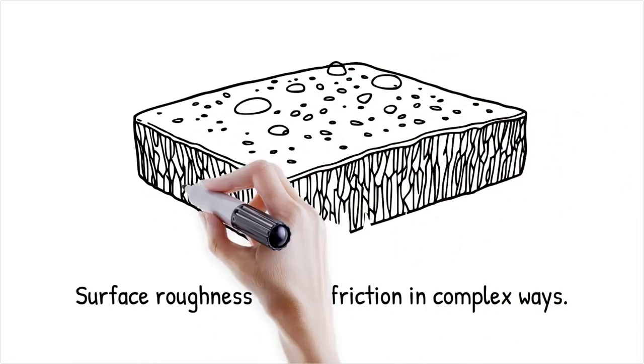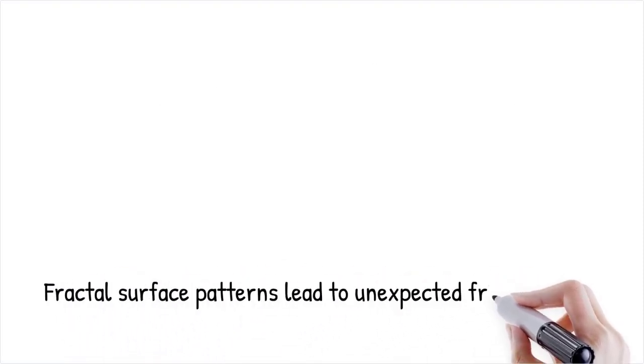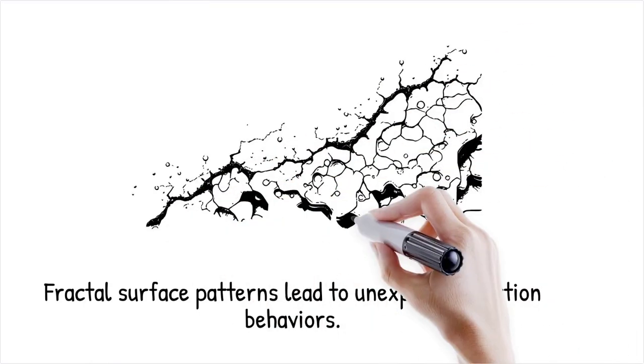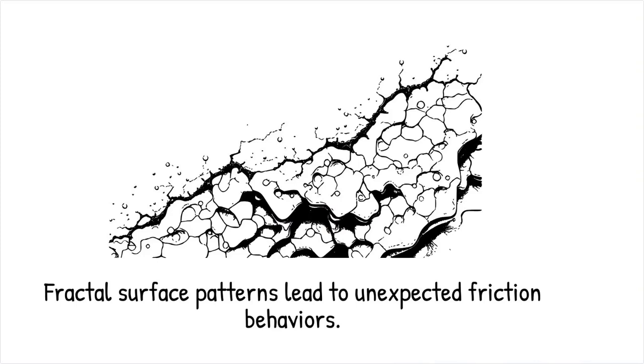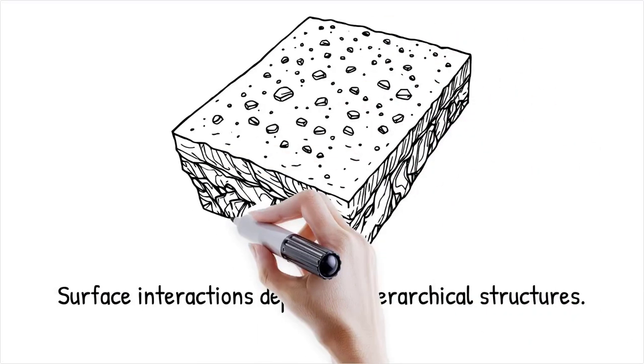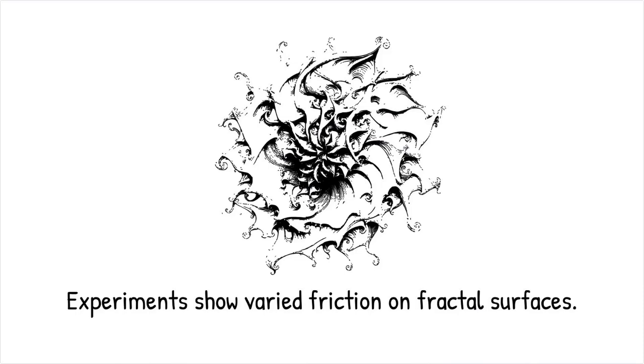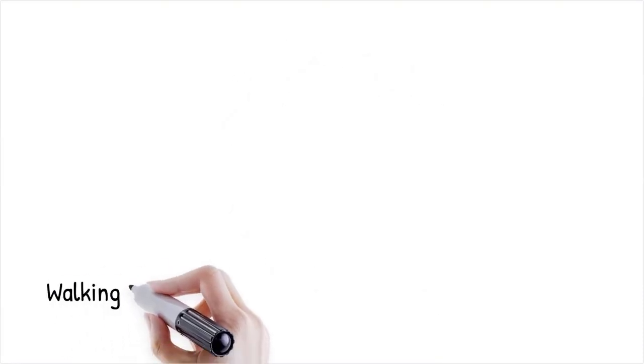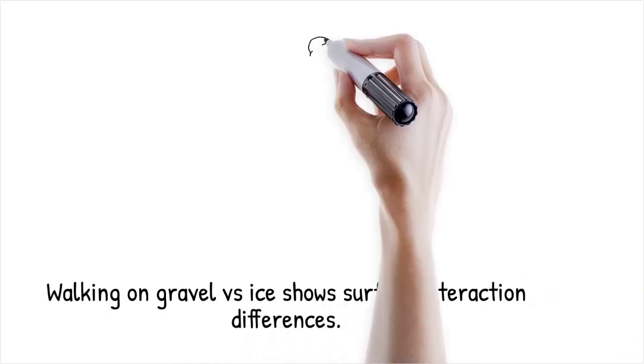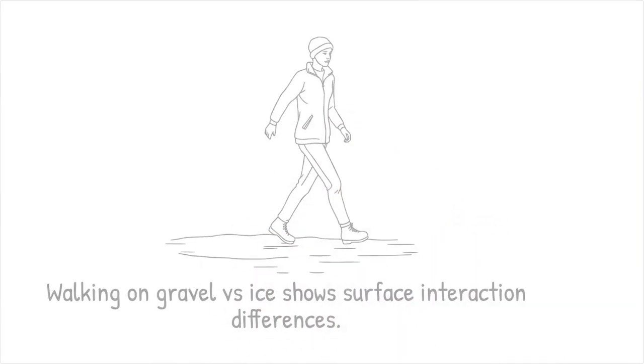Traditional friction models assume that surface roughness increases friction due to interlocking asperities, but real-world observations show that highly rough surfaces can exhibit both increased and decreased friction depending on scale. Fractal analysis of surfaces has revealed that self-similar roughness patterns can lead to unexpected frictional behaviors that classical theories fail to capture. This paradox suggests that surface interactions are not merely a function of roughness magnitude but also of hierarchical structural organization. Experimental studies on ultra-smooth and fractal patterned surfaces show extreme variations in friction, contradicting simple roughness-based predictions. Like the difference between walking on gravel versus a perfectly smooth ice rink, surface interactions depend on more than just roughness. Microstructure plays a crucial role.